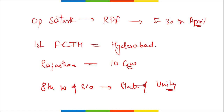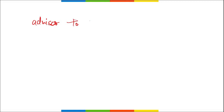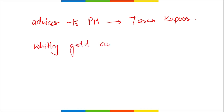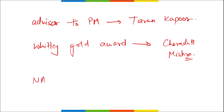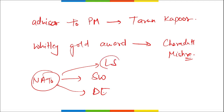Tarun Kapoor was appointed as Advisor to Prime Minister Narendra Modi. The Vittle Gold Award was won by Charudutt Mishra. The World Food Prize went to Cynthia Rosenzweig of NASA. NATO conducted three exercises: Swift Response, Defender Europe (both in Poland), and Locked Shields — the biggest cyber security exercise, conducted in Estonia.